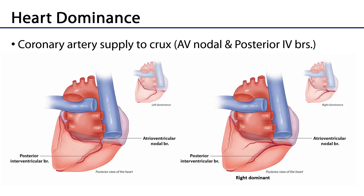Heart dominance is determined by the coronary artery supply to the crux of the heart — whichever arteries give rise to the AV nodal branch and posterior interventricular branch determine dominance. Most hearts are right dominant: approximately 67%. There is no clear consensus in the literature for exact percentages, but codominance is the next most frequent condition, and left dominance — where the LCA supplies the crux — is the least frequent.